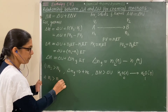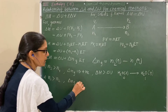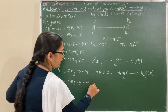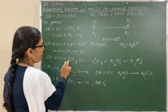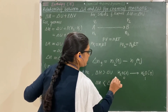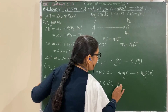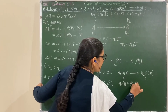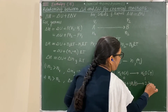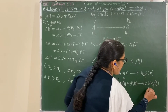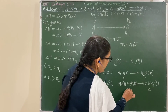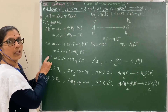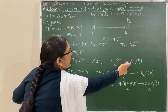Second, if N1 > N2, then ΔNg is negative, so ΔH < ΔU. For example, in the formation of ammonia: N2(g) + 3H2(g) → 2NH3(g). Reactant moles = 1 + 3 = 4; product moles = 2. So N1 > N2, ΔNg is negative, and ΔH < ΔU.